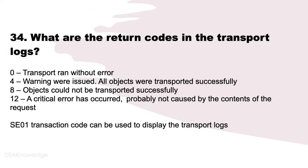What are the return codes in the transport logs? Return code 0: transport ran without any error. Return code 4: warnings were issued, but all objects were transported successfully. Return code 8: objects could not be transported successfully. Return code 12: a critical error has occurred, probably not caused by the contents of the request. SE01 transaction code can be used to display the transport logs.